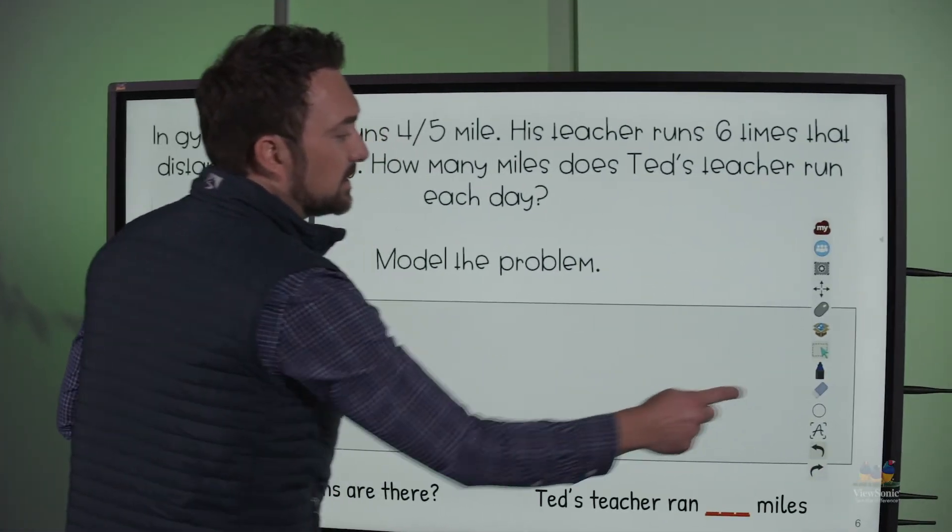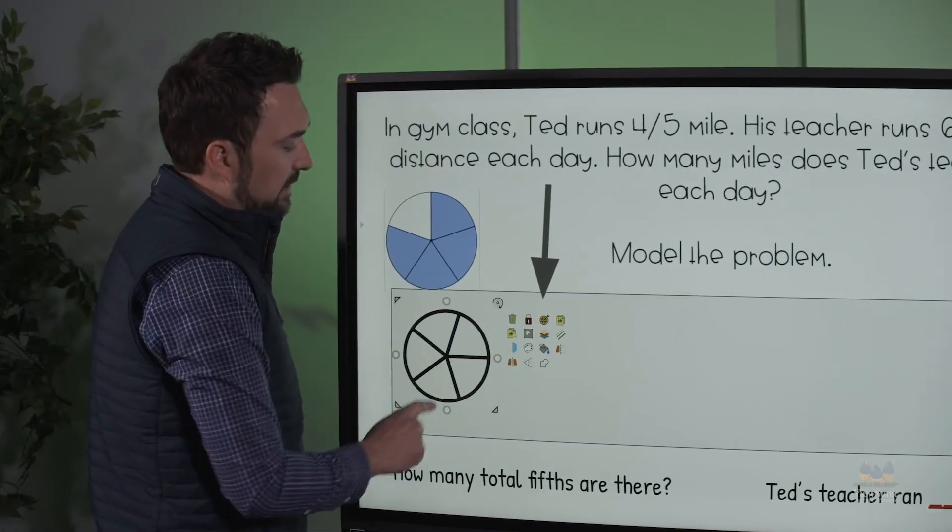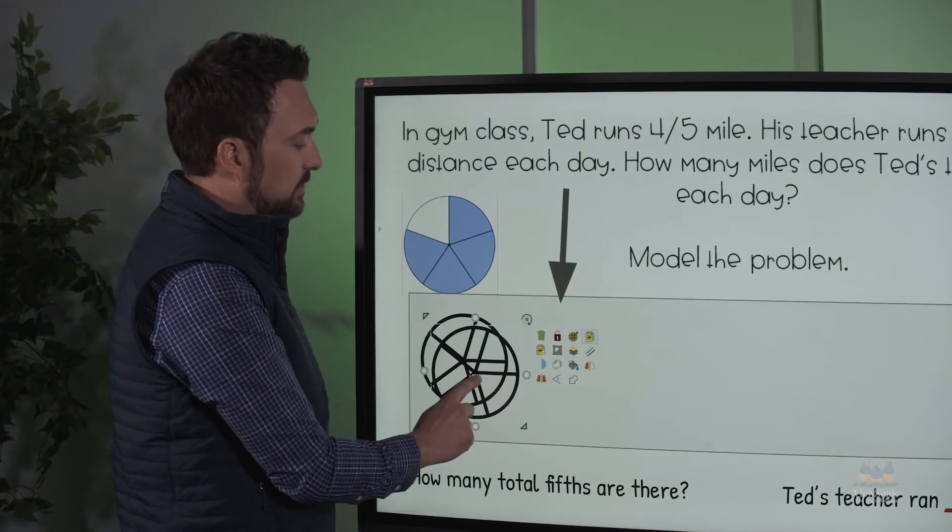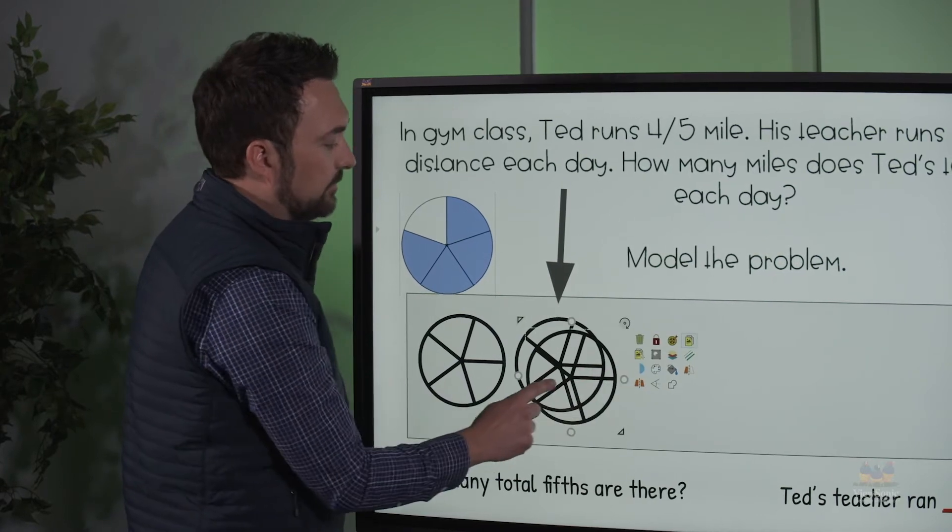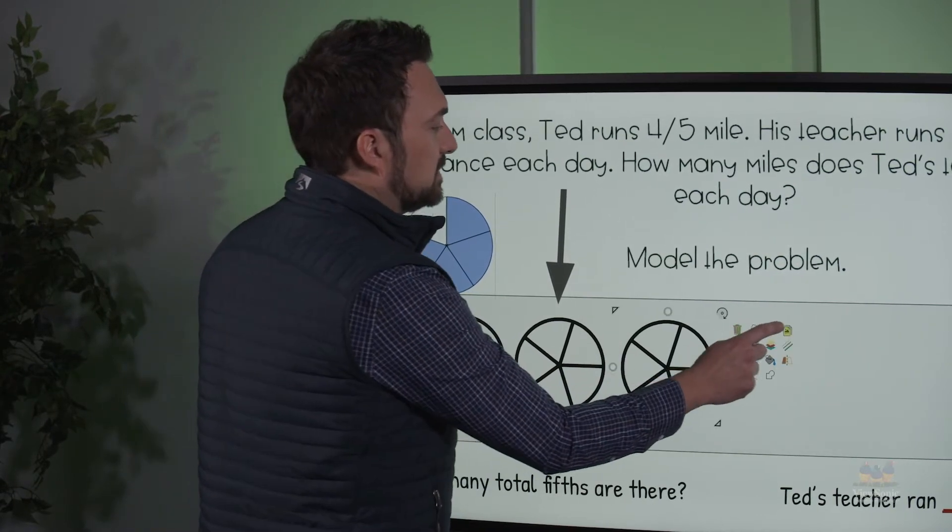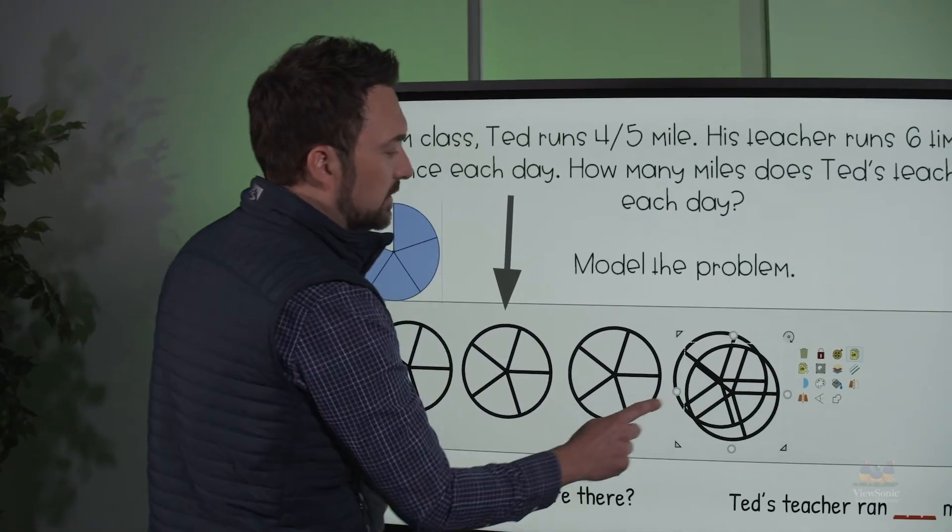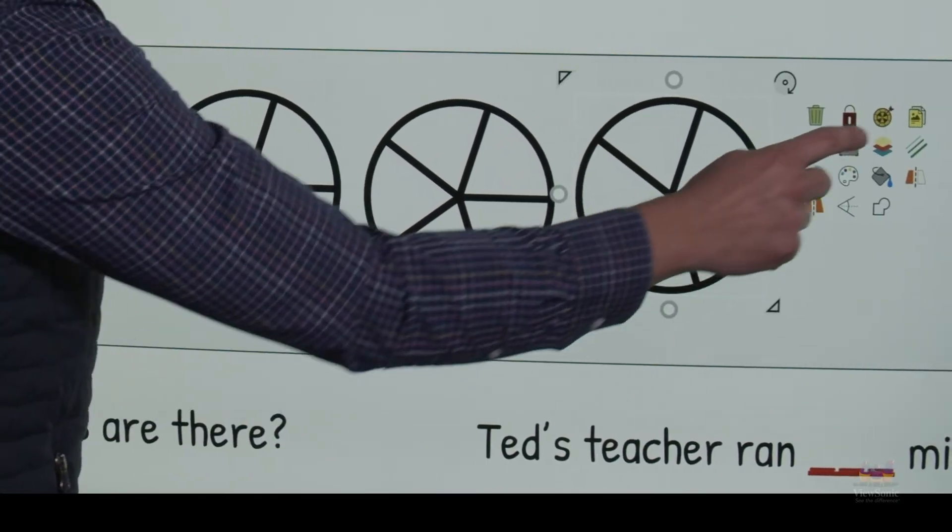I'm going to switch to my select tool, select that circle, and then I'm going to use the copy and paste feature to duplicate this over and over again. In this particular problem we need to multiply four-fifths times six, so I'm going to create six circles.